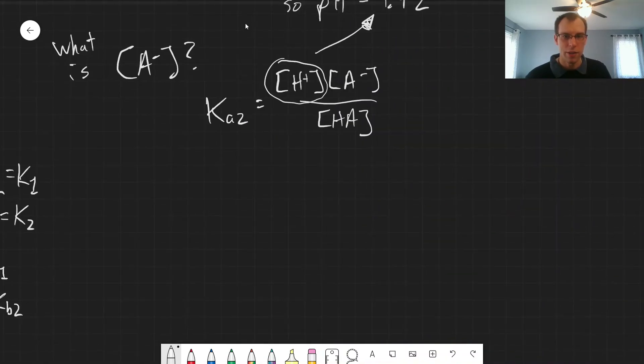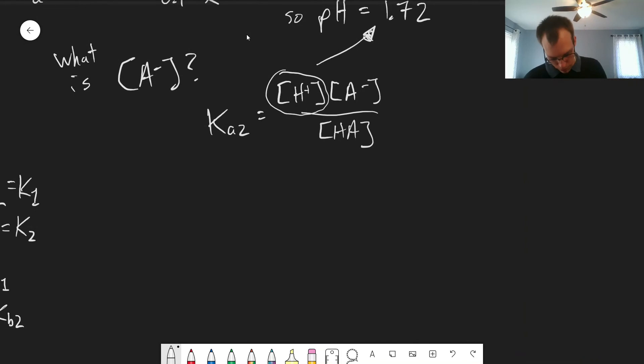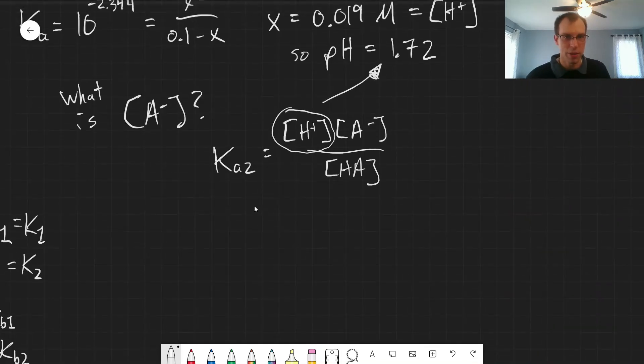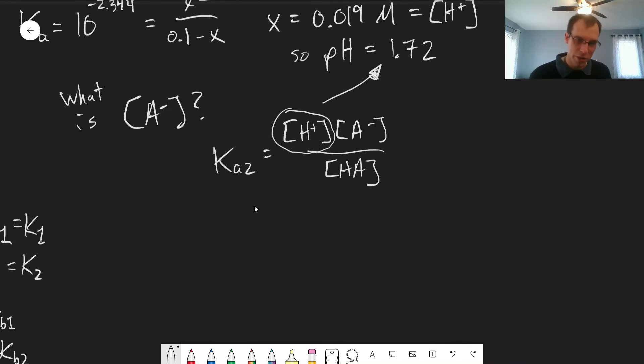So what we can say is that concentration of H plus is 0.019 molar. Concentration of HA, also 0.019 molar. So we can put those into our equation here.